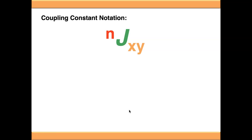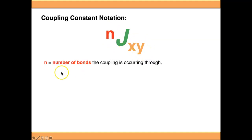A final point on coupling constant notation: they're generally expressed as J with an italicized N superscript and then some label. N is the number of bonds through which the coupling is occurring — probably the most important part — and we'll refer to this in other videos as well, so it's good to get used to it now.